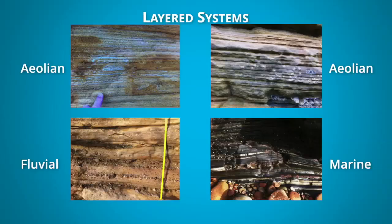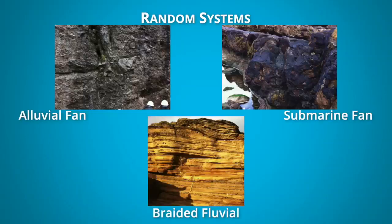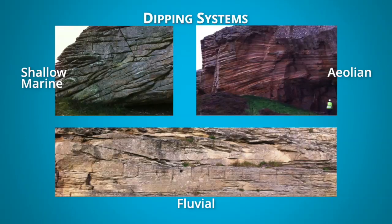If you are interested in flowing rocks and you are looking at analogues in the field, I advise you to always consider averaging and anisotropy at whatever scale you are looking at, whether they are layered systems, random systems, or complex dipping systems.